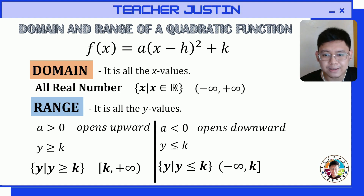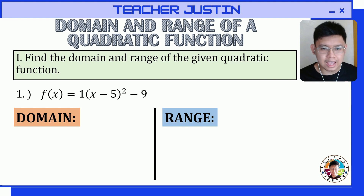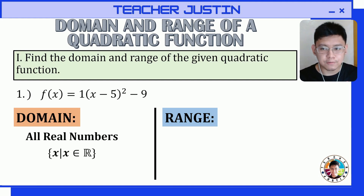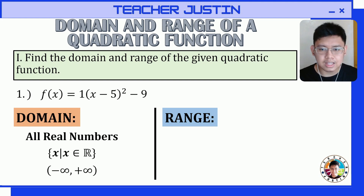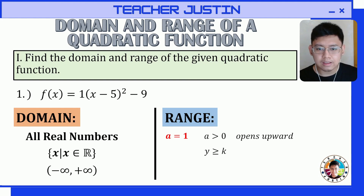Let's find the domain and range of this given quadratic function. The first step is to find the domain. Remember that the domain of our quadratic function will always be all real numbers, so our answer will be: x such that x is an element of any real number, or we can use the interval form from negative infinity to positive infinity. For the range, let's identify the orientation of our graph — since a is equal to 1, it is greater than 0, so it opens upward.